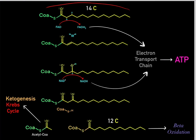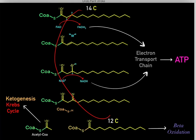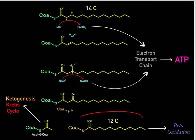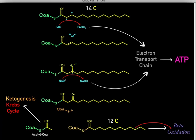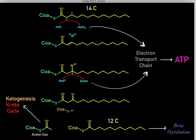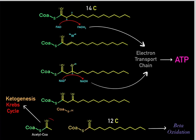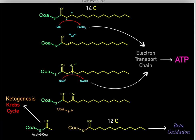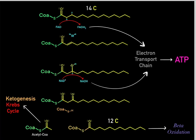This is how we take free fatty acids and oxidize them to produce ATP — through successive rounds of beta-oxidation. Once we form the 12-carbon acyl-CoA, it goes through another round, and another, until we are left with many acetyl-CoA products. Those acetyl-CoA products can either enter the Krebs cycle or, more commonly in the context of beta-oxidation, enter ketogenesis to biosynthesize ketone bodies and keto acids.